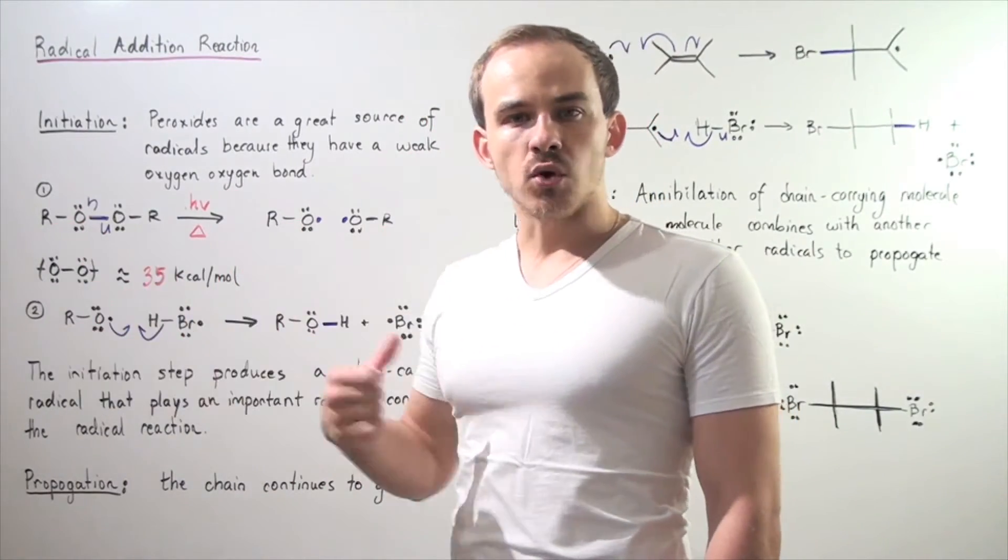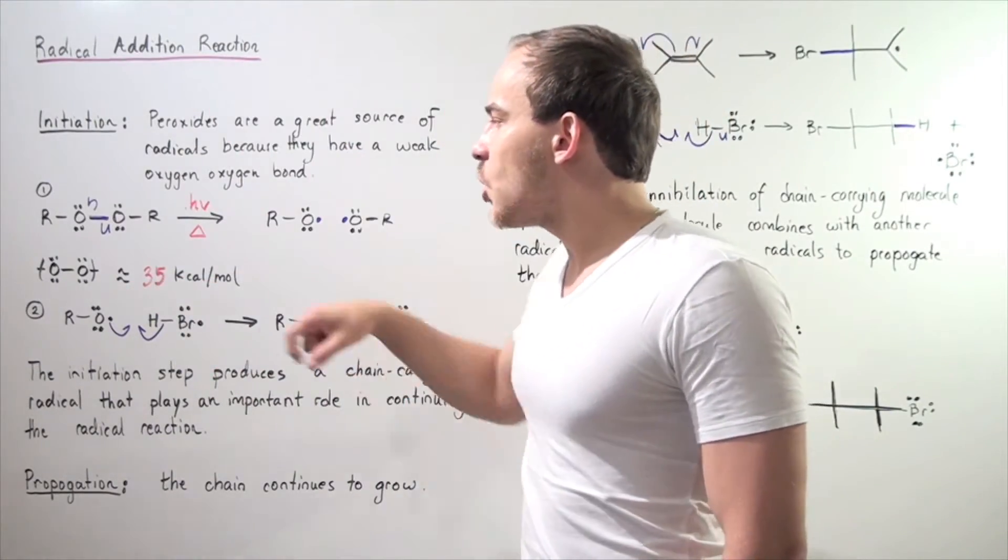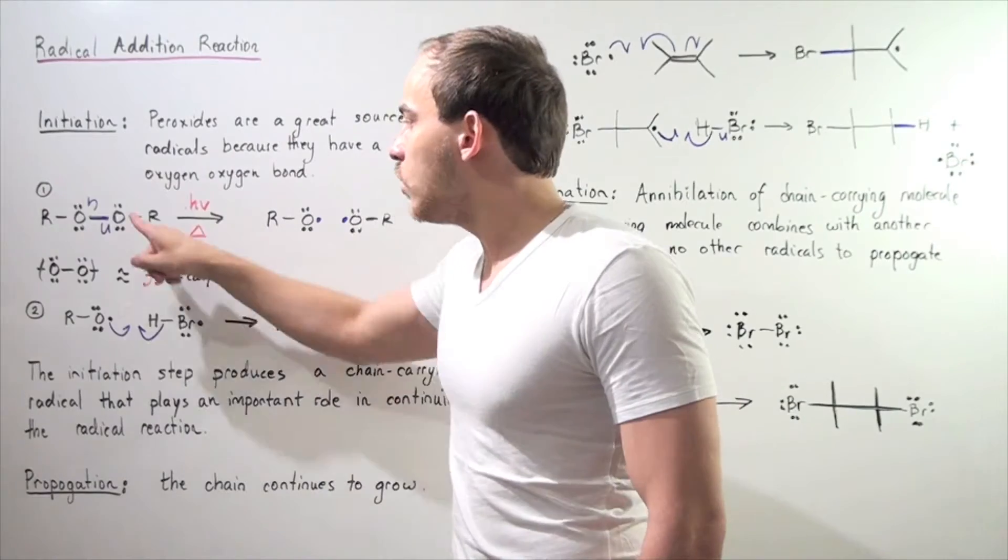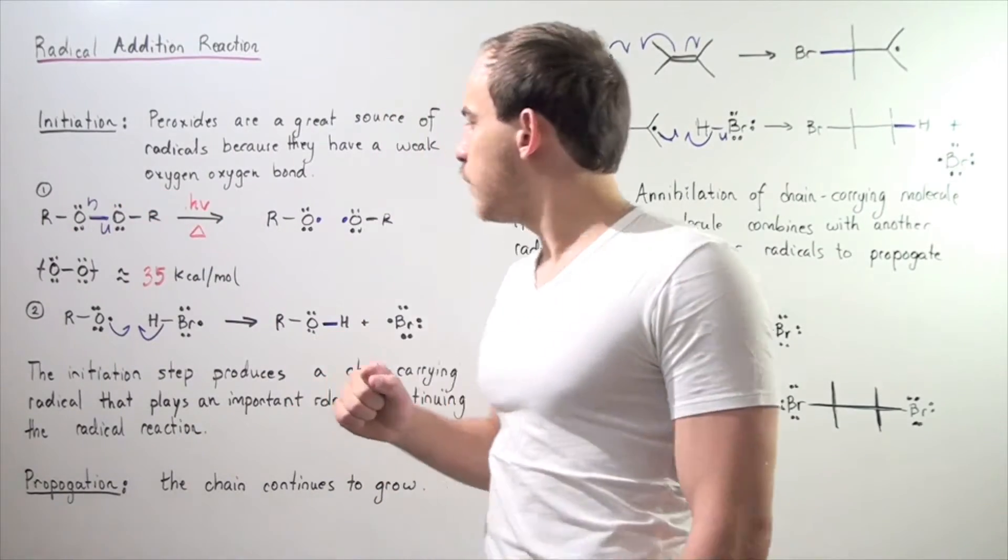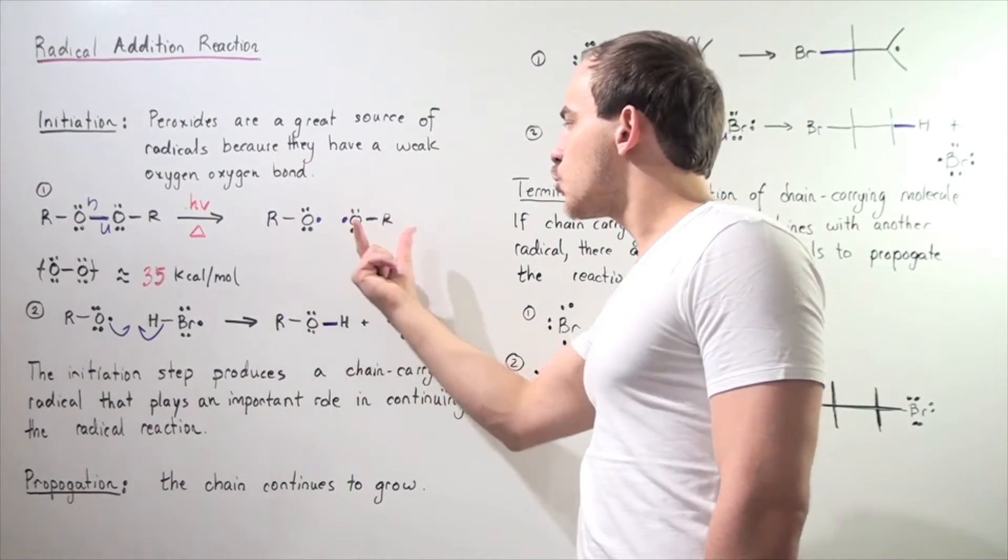If we add some source of energy that's this amount or greater, we're going to break one mole of these bonds to form the following two molecules. These two radicals are identical because these R groups are identical.